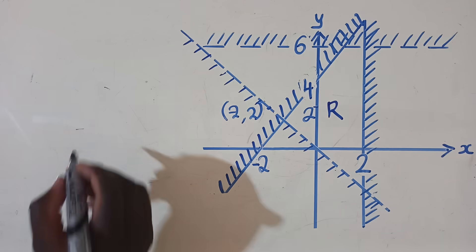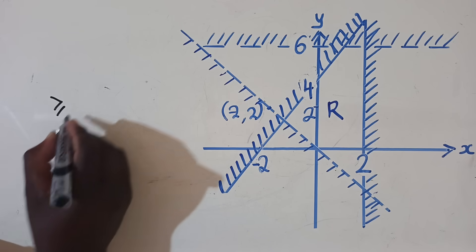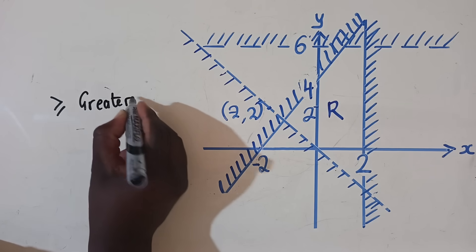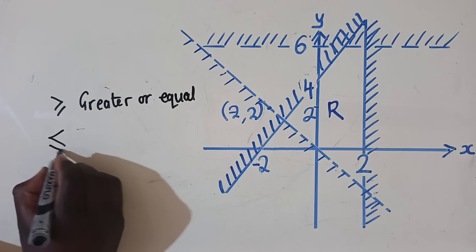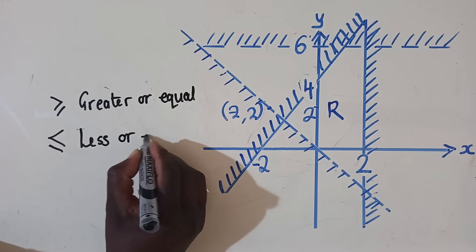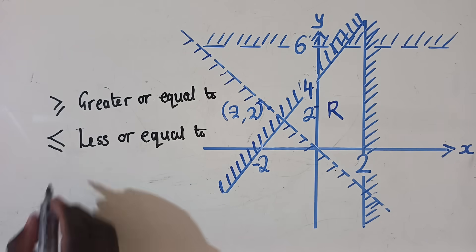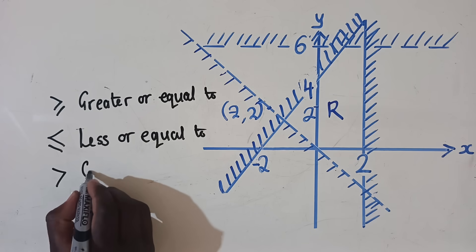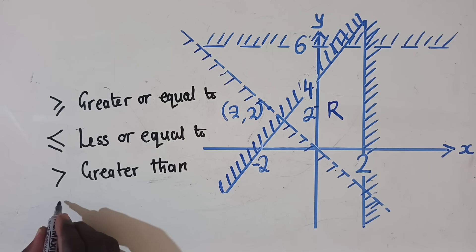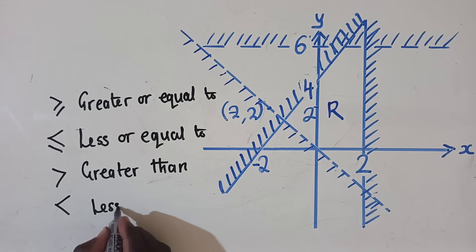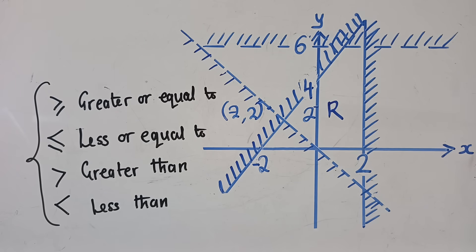It's Paper 1 Linear Programming, where you only need four signs. The first sign is greater than or equal to. The next one is the opposite — less than or equal to. The third one is greater than. The fourth one is less than. So these are the four signs or symbols you need to know.